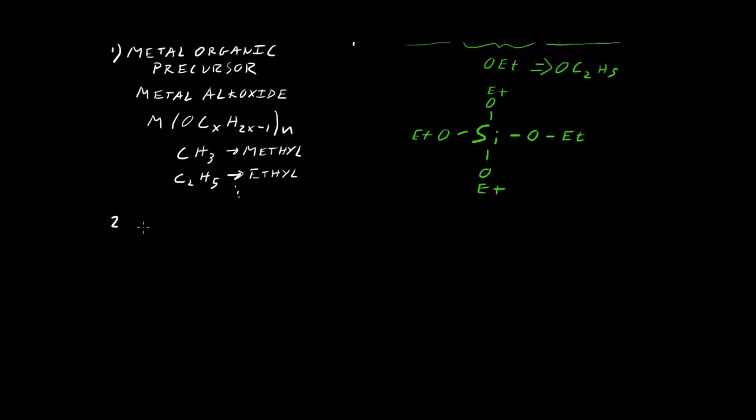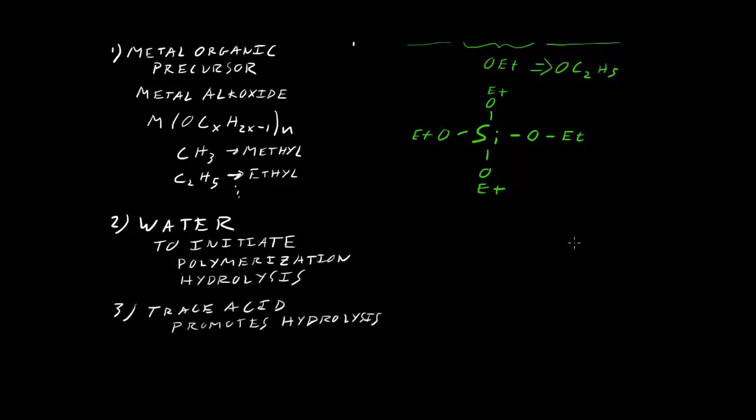Now, in order to do that, we are going to need water. Water will hydrolyze those ethyl groups, and it will give us a better functional group that we can use to react. But we can use the water to initiate the polymerization, and we can add a trace acid to help the water along, to promote the process of hydrolysis.